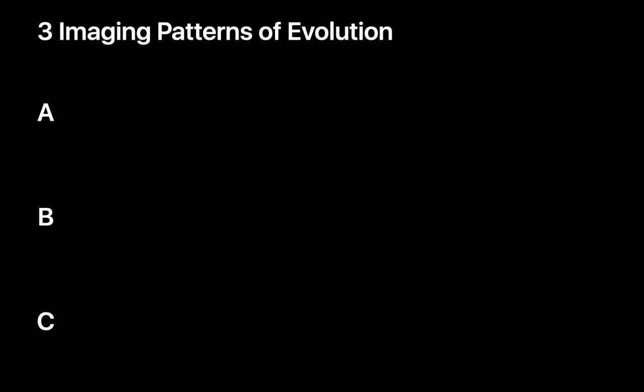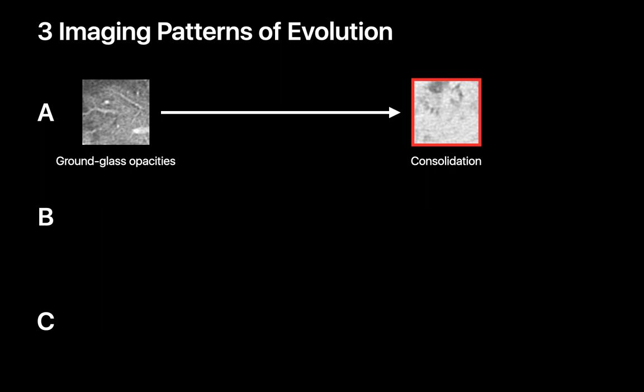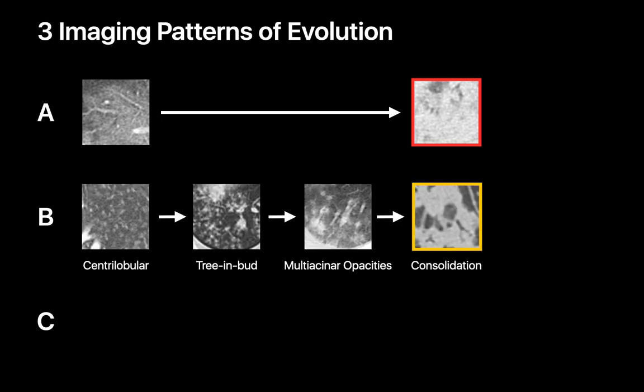When we study the natural history and imaging presentation of lung infections, three primary imaging patterns of evolution emerge. Some infections initially present as ground glass opacities that progressively increase in density to become consolidation — seen in viral infections and opportunistic infections like pneumocystis. Others initially present as a centrilobular nodular pattern that evolves into a tree-and-bud pattern, then becomes increasingly confluent multi-acinar opacities that may ultimately progress to consolidation, as seen in aspiration pneumonia and mycobacterial infections like TB and MAI.